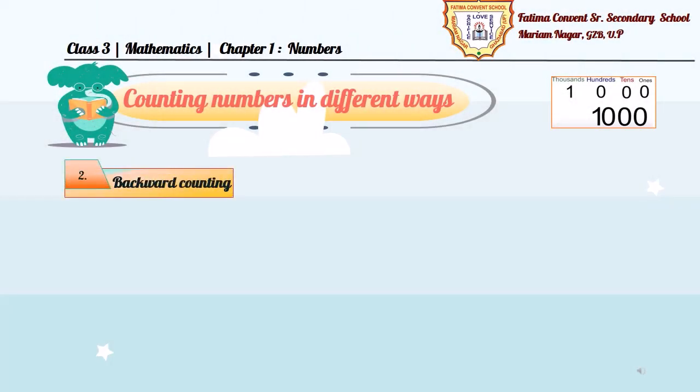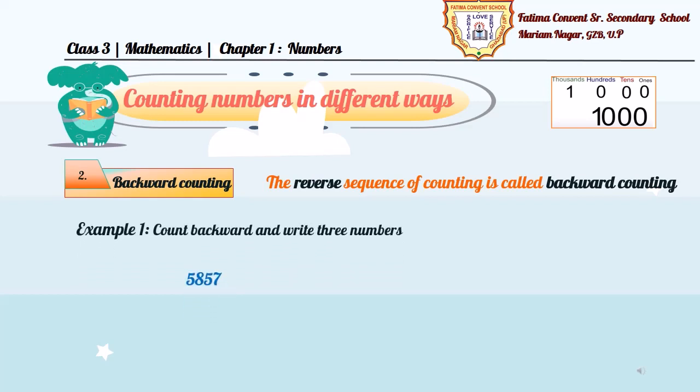Children, let's discuss about the second type of counting, backward counting. The reverse sequence of counting is called backward counting. In this, we are counting the numbers backward. For example, 5857, we need to write the next three numbers by counting backward. So, for that, we need to subtract 1 from the given number. So, the answer is 5856, 5855, and 5854.